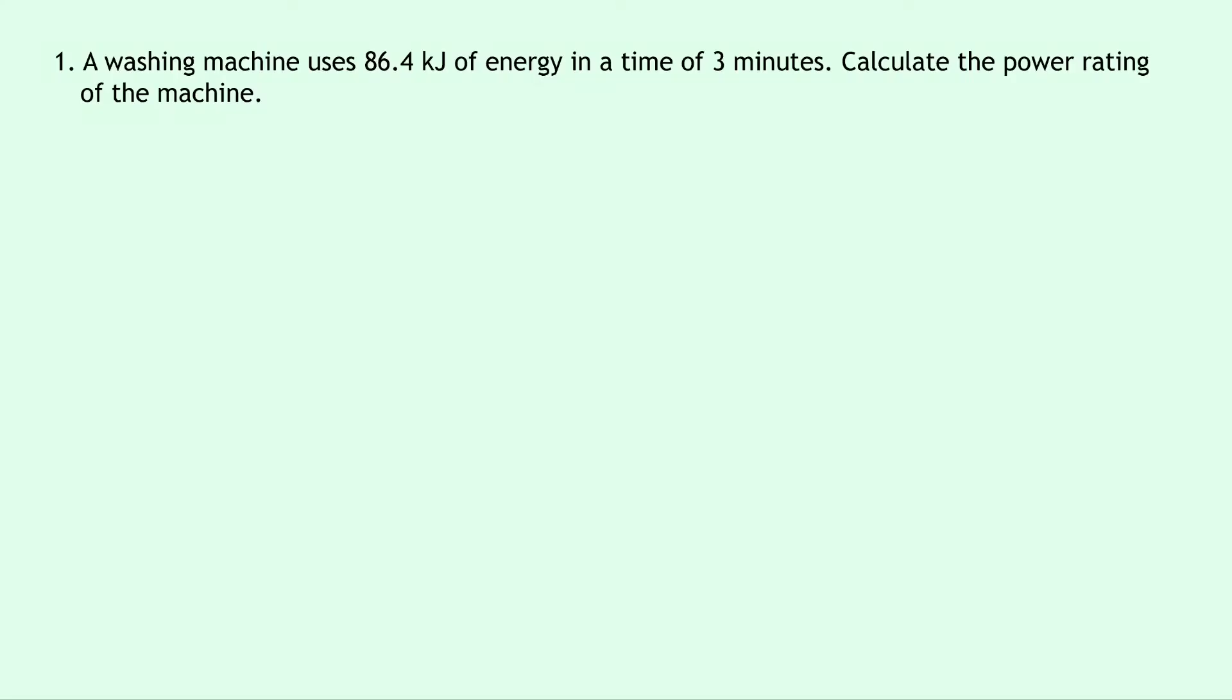Question one says that a washing machine uses 86.4 kilojoules of energy in a time of three minutes. Calculate the power rating of the machine. Well first of all notice that the two values given in the question have prefixes, so we've got kilojoules instead of just joules, and we've got minutes instead of just seconds.